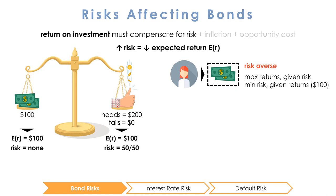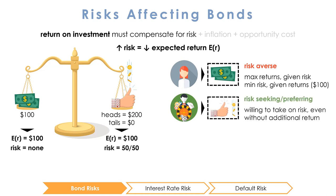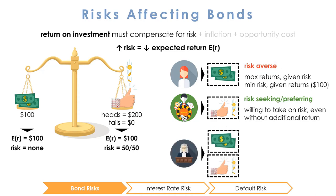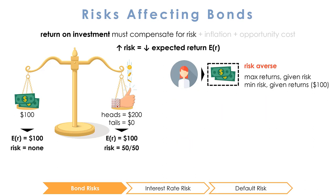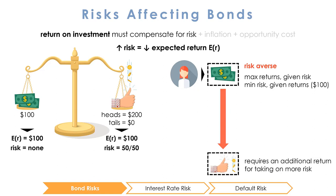Risk averse investors aim to maximize returns for a given level of risk and minimize risk for a given level of return. Most investors fall into this category. You may also choose to gamble and go for option 2 — this risk seeking behavior is usually only seen in isolated contexts like at the casino rather than in financial markets. Or you may be indifferent between the two options — this behavior is risk neutral, as it seeks to maximize returns regardless of risk. Risk averse investors require an additional return in the form of a higher interest rate in exchange for taking on an investment with higher uncertainty of receiving future cash flows. We call this extra return the risk premium.